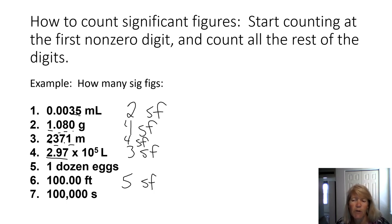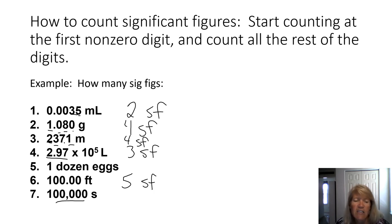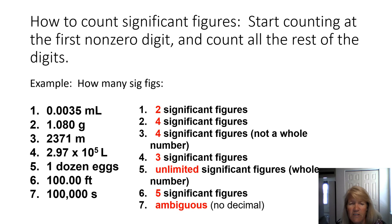Number seven is the trickiest one because it doesn't have a decimal. Big numbers that don't have a decimal — these zeros could be significant figures, but they could just be placeholders showing how big the number is. Generally speaking, I would assume those zeros are placeholders and not significant, so probably call it one significant figure, but it's really not clear the way the number is written. Big numbers with no decimal are ambiguous, and scientific notation can help avoid that ambiguity.